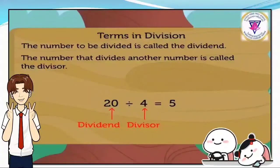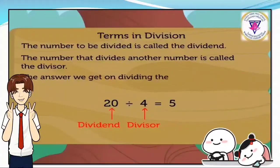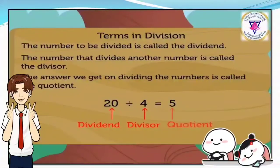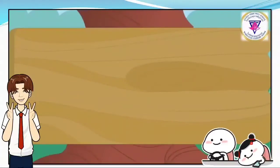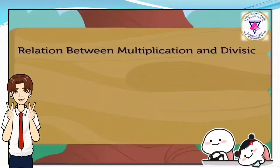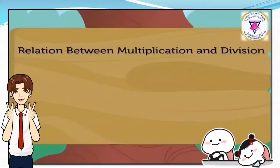Finally, the answer we get on dividing the numbers is called the quotient, which is 5 here. Now that we are clear about the terms, studying the relation between multiplication and division will become simpler.